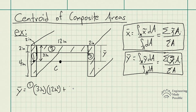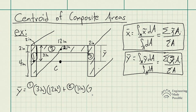Now we add area number two. The centroid of this rectangle is at its center. The height of this rectangle is two inches, so it's going to be one inch from the top portion. So one inch is our Y-bar here, times the cross-sectional area of this rectangle, which is 12 inches times two inches, giving us 24 square inches.